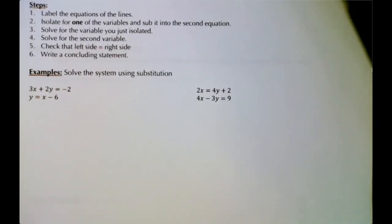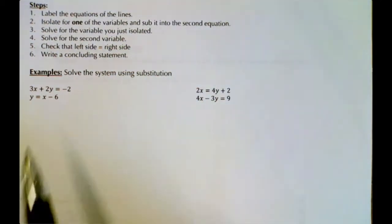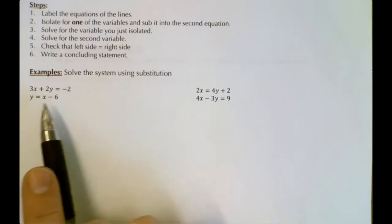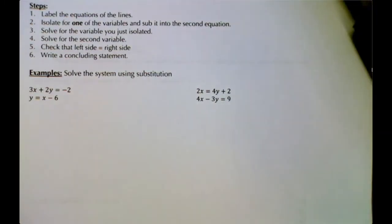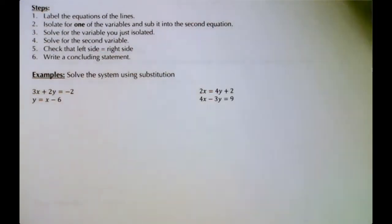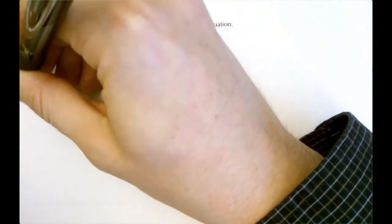We have two systems and we're going to look at them one at a time. We're going to first solve this system — we're looking for where these lines cross. We could solve it graphically, but this video is about solving algebraically using substitution. The first step is to label the equations, so I'm going to label them equation 1 and equation 2.